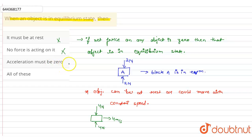Option C: acceleration must be zero. So it is true because if F_net is zero, which means F_net is equal to mass into acceleration, so if F_net is zero then we can say acceleration is also zero. So acceleration must be zero. Okay, so this is correct. So option C is correct. Thank you.